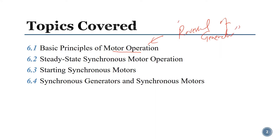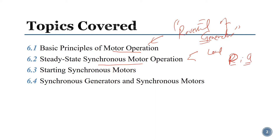If you understand the concept of generator operation, this chapter is like a piece of cake, because almost everything is reversed. After the basics, we will take the steady-state operation of the motor — how the operation is affected when you change the load. Just as in the generator we studied how real power and reactive power change based on load characteristics, we will see similar things here.